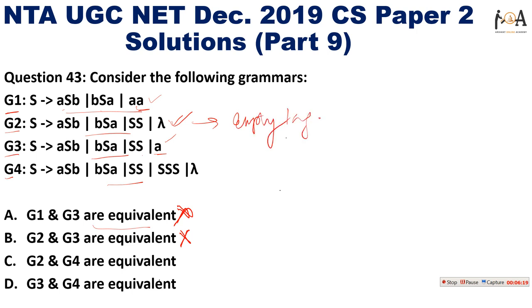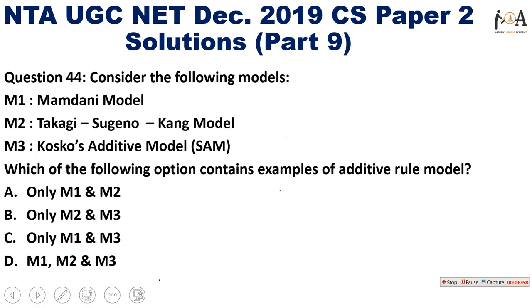G2 and G3 are not equivalent because G2 can generate the empty language but G3 cannot. G3 and G4 are also not equivalent because G4 can generate the empty language but G3 cannot. After cancelling options A, B, and D, we are left with G2 and G4 — Option C is the correct answer.